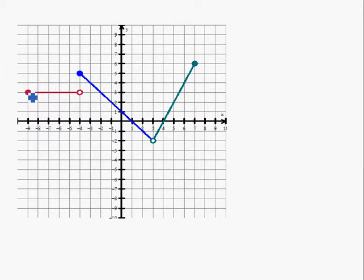But there are three pieces. The first is this line here, this red line, and it goes from negative 9 to negative 4. The second is the blue line that goes from negative 4 up until 3. And then the third piece is this aqua green color, and that goes from 3 to 7.